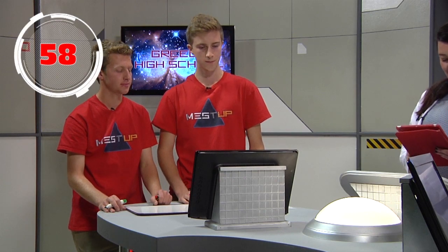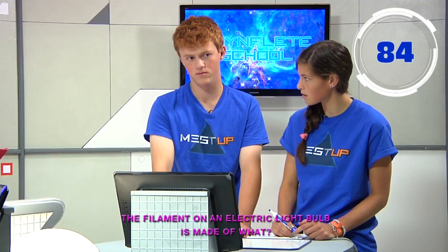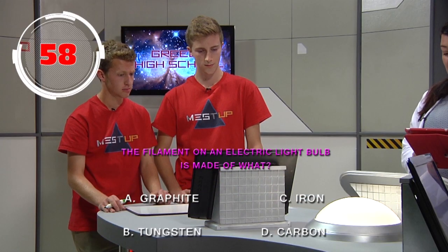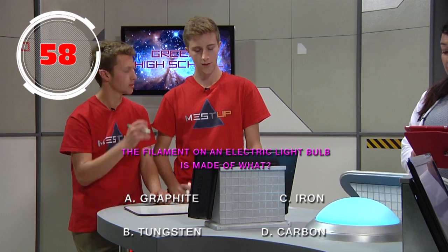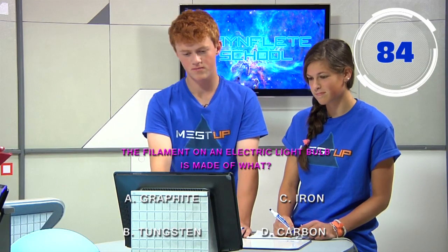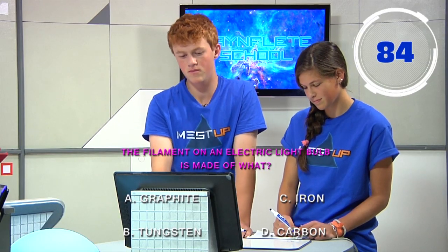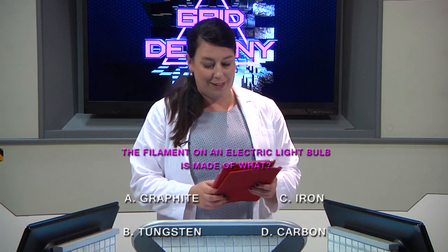Engineering for 10. The filament on an electric light bulb is made of what? Multiple choice: A, graphite; B, tungsten; C, iron; or D, carbon? Blue team answers B. That's correct — tungsten.